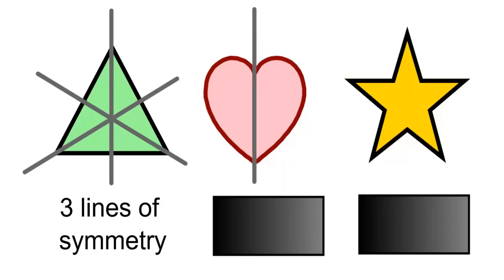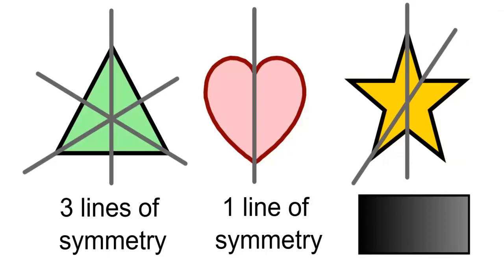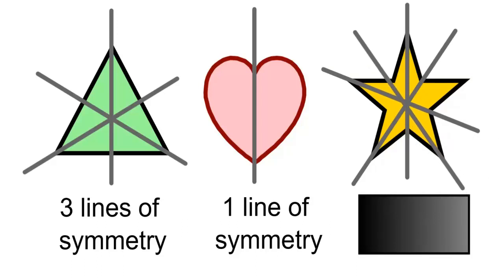In the heart, we have 1 line of symmetry. And in a star, we have 1, 2, 3, 4, and 5 lines of symmetry.